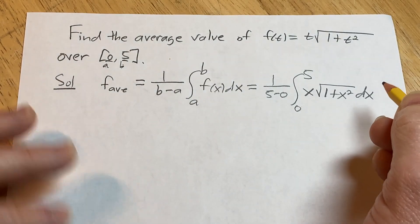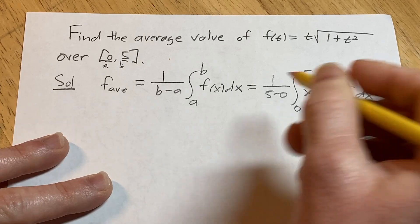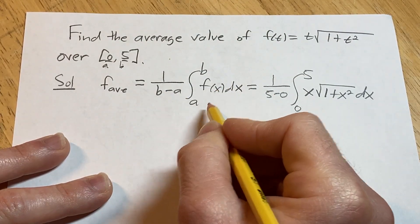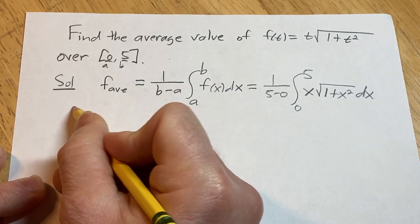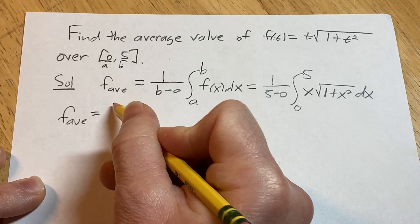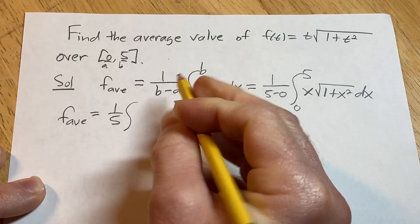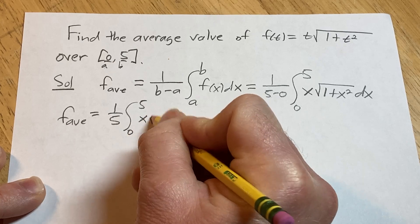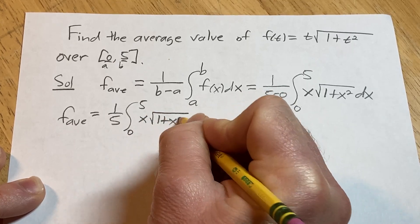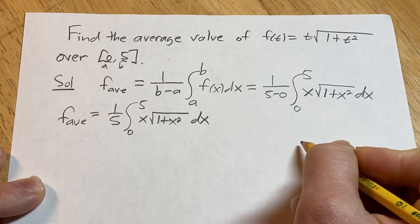You can also use t, it doesn't really matter, it's no big deal. It's just the formula usually has an x in it. I'm going to go ahead and just subtract these numbers just to clean it up. So the average value of a function is equal to 1 over 5, definite integral from 0 to 5, then we have x square root 1 plus x squared dx.